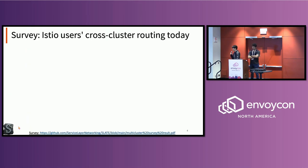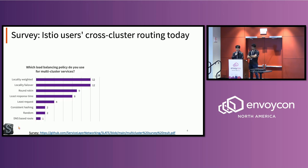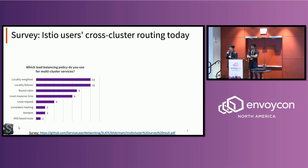Before going into our own system, we want to share some interesting survey results we conducted on the Istio community about cross-cluster routing. We asked: what kind of load balancing are you using for multi-cluster service? Multi-cluster service is simply an individual service deployed in multiple clusters. The answers included locality-weighted and locality-failover, which we'll talk about later in the presentation.